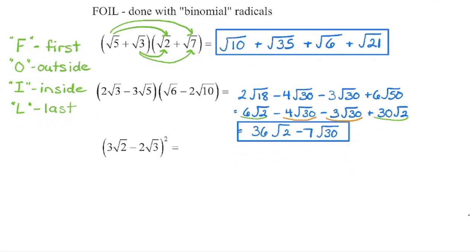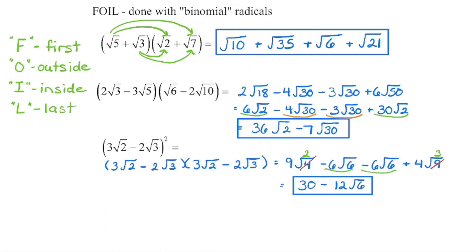Watch carefully: when we multiply the last terms together, we have a negative times a negative, which gives us that positive. For the last example, we have a binomial squared, meaning we have the base times itself — the exact same binomial in each bracket.